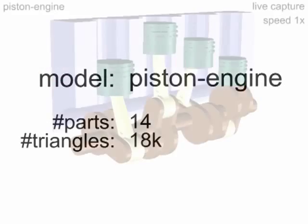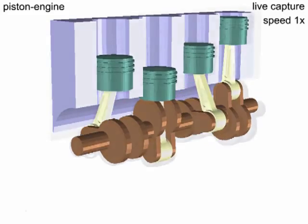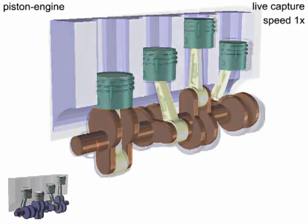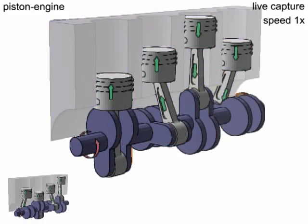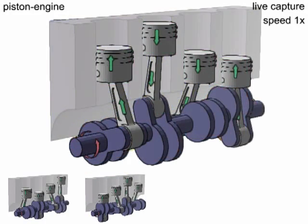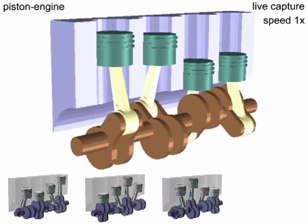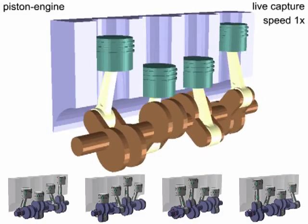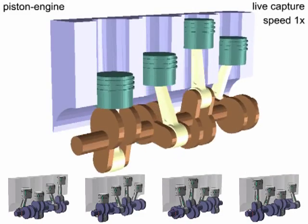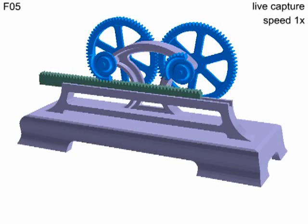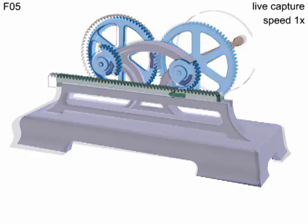For periodic motions, we use the extremal positions of translational parts to create keyframes. In this example, we see a case with a contact edge that appears and disappears over time.